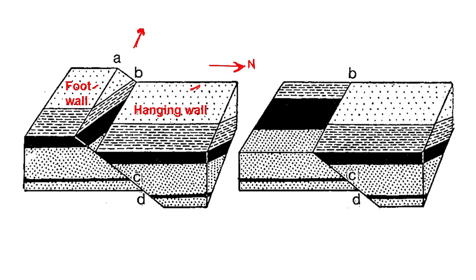In case of a normal fault, this would be the north block and this would be the south block. In case of a normal fault, the north block — which is the hanging wall — has gone down. Now you can see the strike of the beds on the fault plane of the footwall. As the footwall is at a higher elevation, erosion will continue and this would come to an equal level.